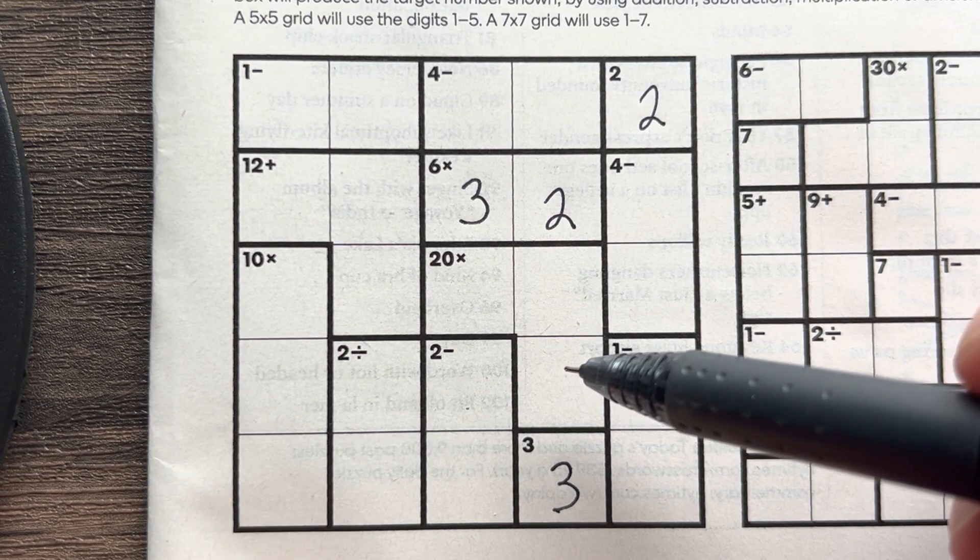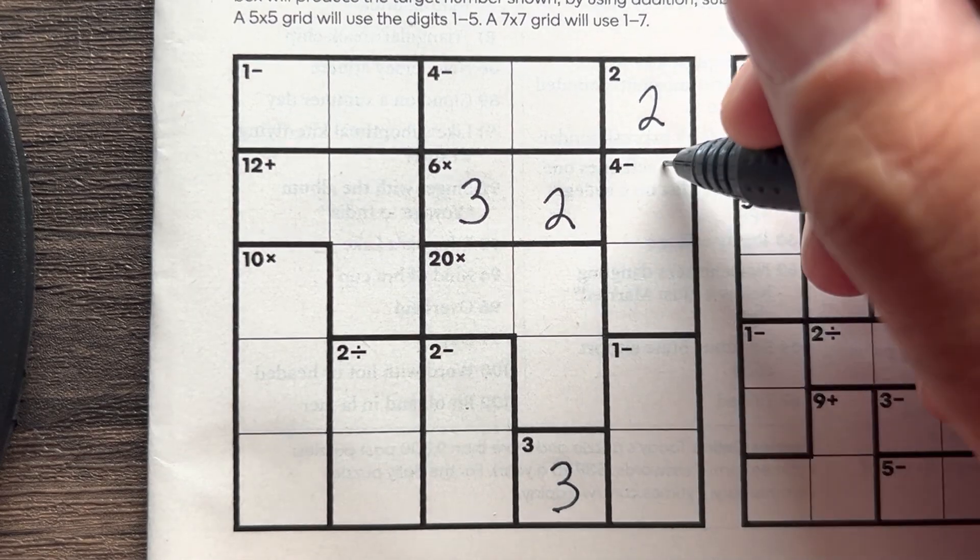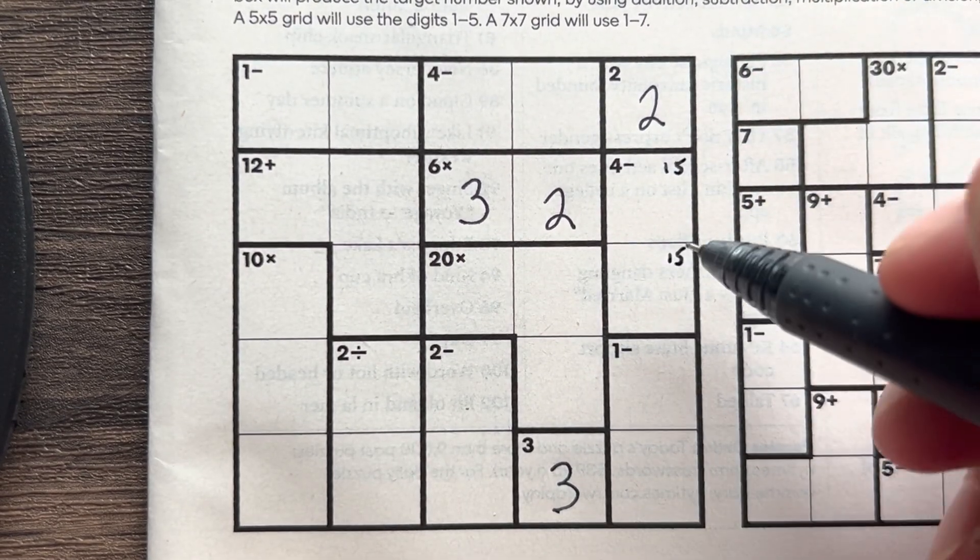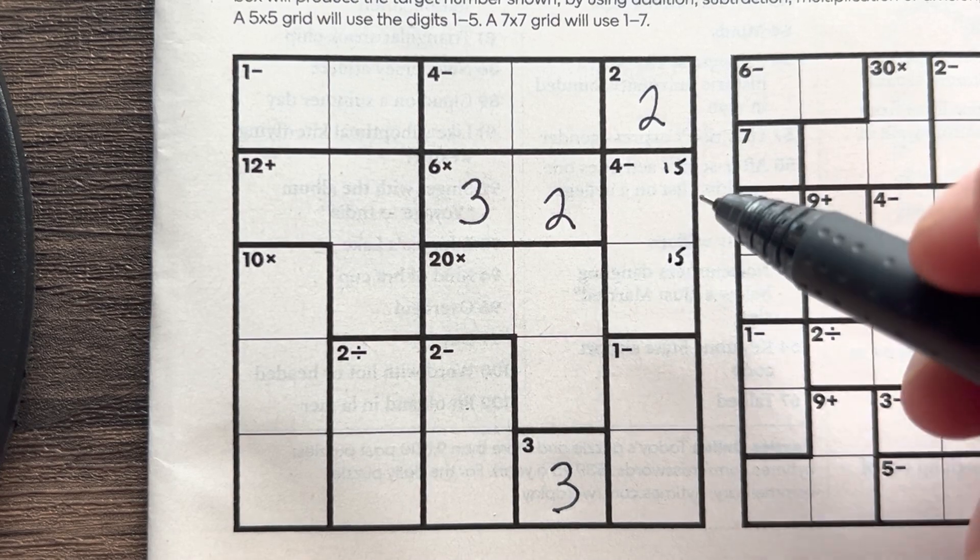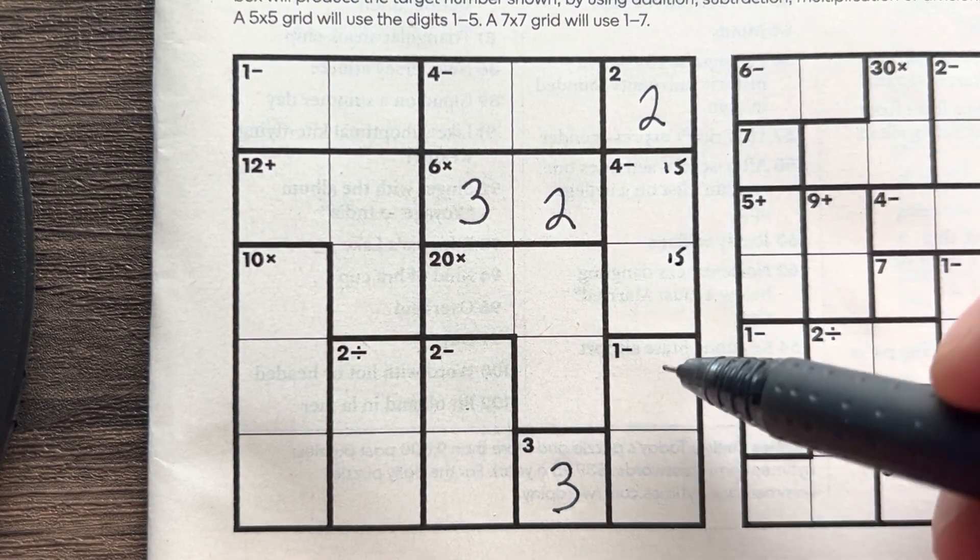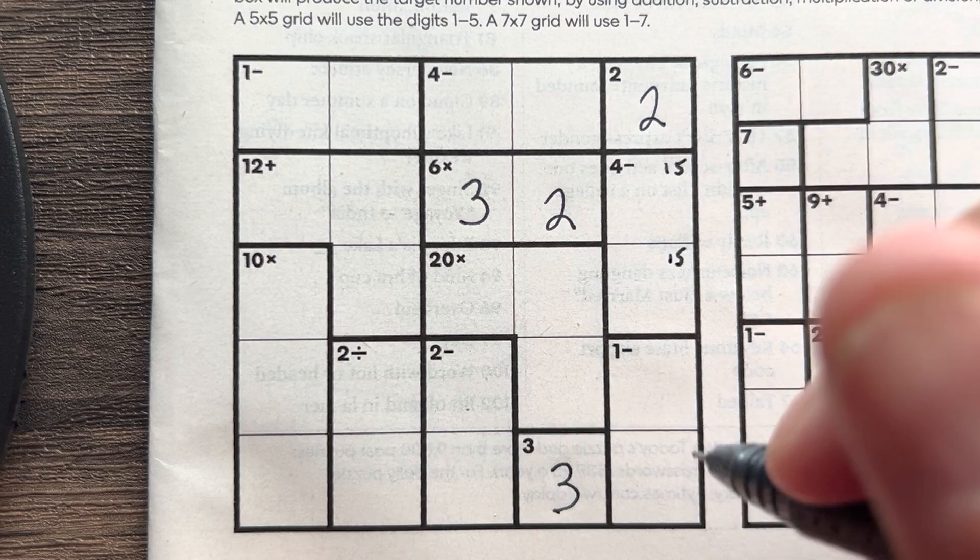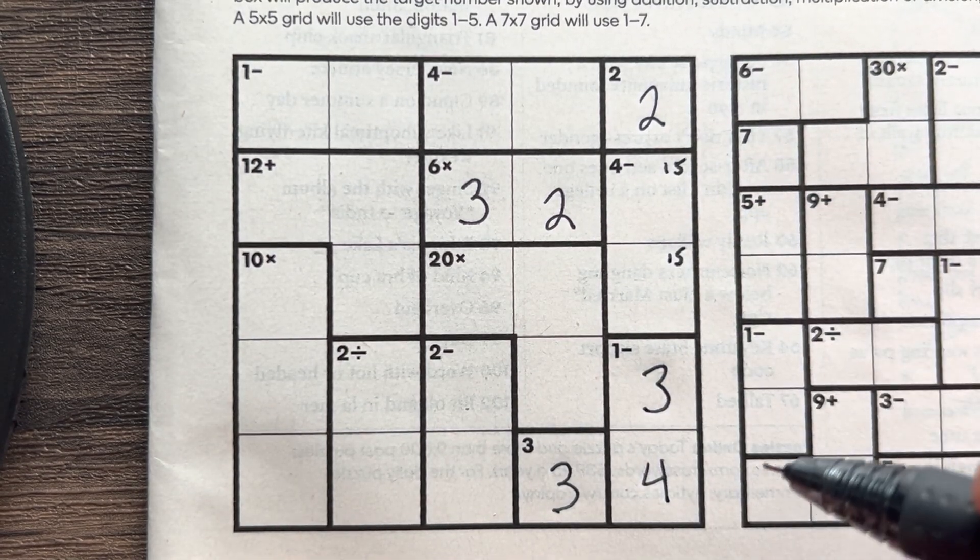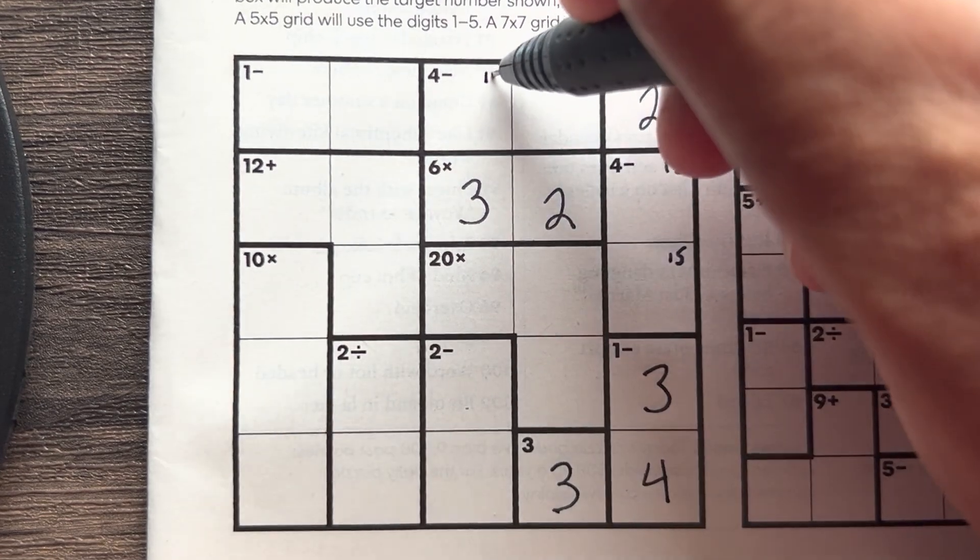All right, let's just fill in what we think we know. That has to be one five. So the two's gone. The only thing down here is three four, and the three helps us so we can place it. This one is one five.